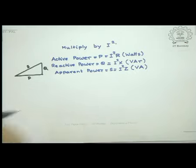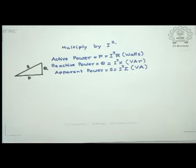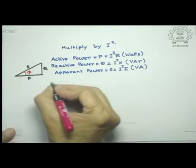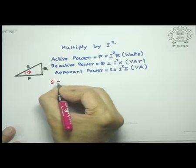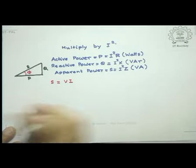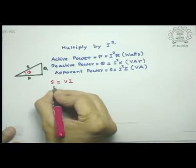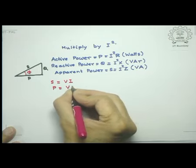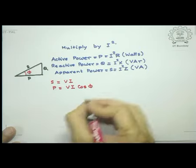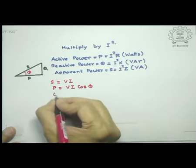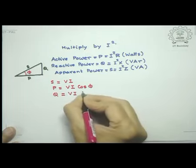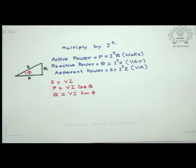So the apparent power S equals V times I, measured in volt-ampere. The active power P equals V times I times cosine phi, measured in watts. The reactive power Q equals V times I times sine phi, measured in volt-ampere reactive. The angle phi, the cosine of which is the power factor, relates these three sides of the power triangle.